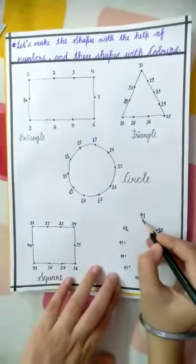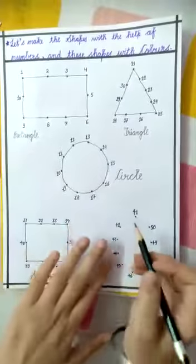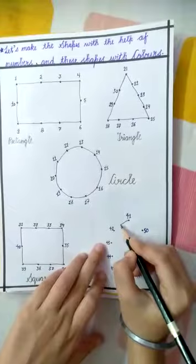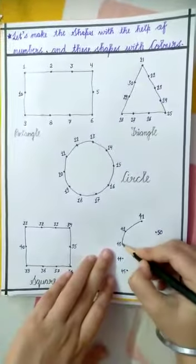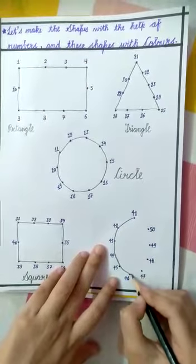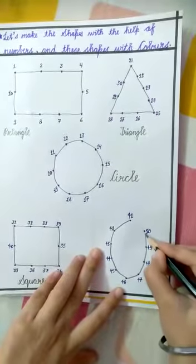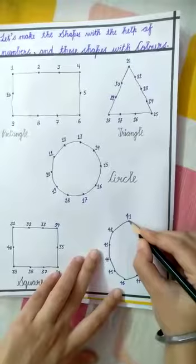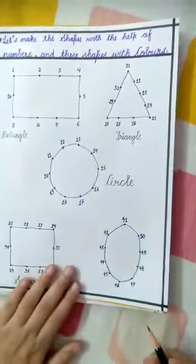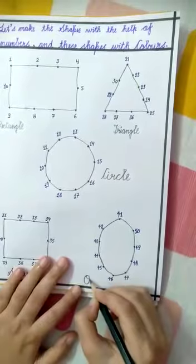Now for the last shape. We start from forty-one on the left side. Forty-one, forty-two, forty-three, forty-four, forty-five, forty-six, forty-seven, forty-eight, forty-nine, fifty — and join back up to forty-one. This is our oval shape. Which shape is this? This is oval shape — it is like an egg. O-V-A-L, oval.